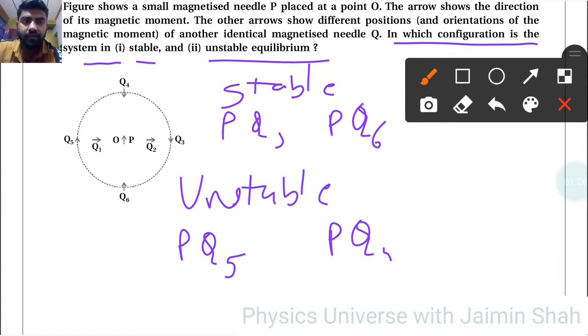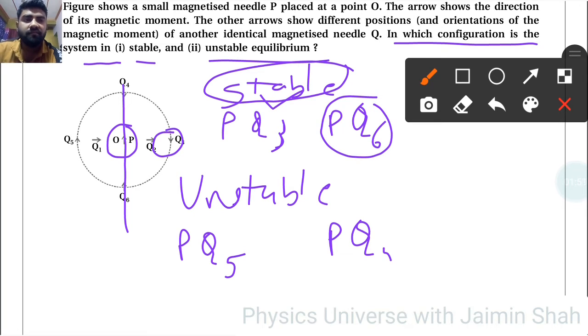Now, question is why? So, why P-Q3? See, this is in upward direction and Q3 on equatorial point. It must have downward direction. It must have opposite to be in stable condition. But P-Q6 on vertical axis—see, this is vertical axis—they should be in parallel to get this stable condition.